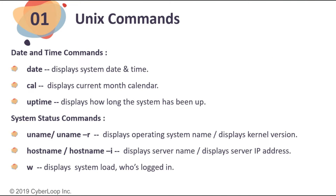Now let's see date and time commands. 'date' — displays the system date and time. 'cal' — displays the current month calendar. 'uptime' — displays how long the system has been up. System status commands: 'uname' or 'uname -a' — displays the operating system name and kernel version. 'hostname' or 'hostname -i' — displays the server name and IP address. 'w' — displays the system load, who's logged in, and other information.